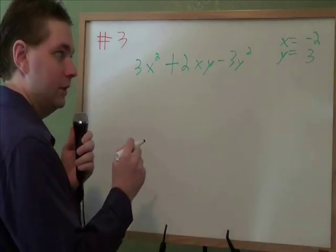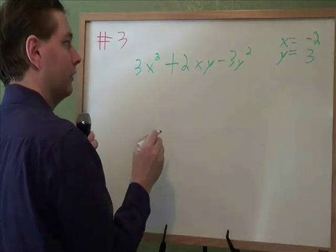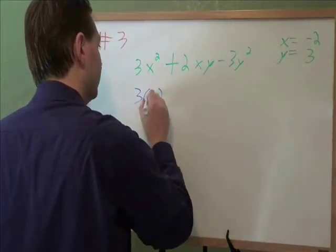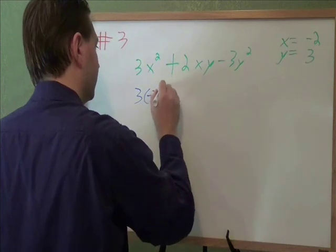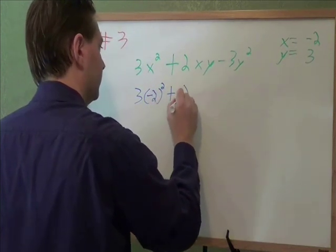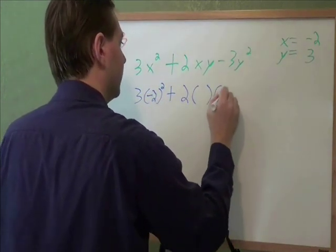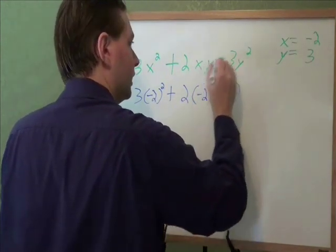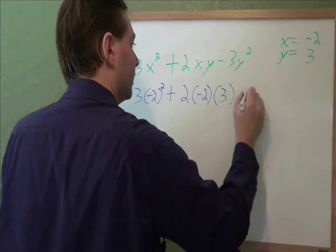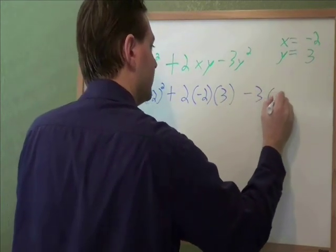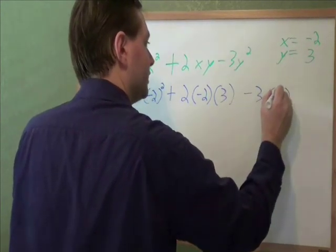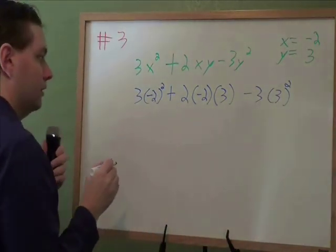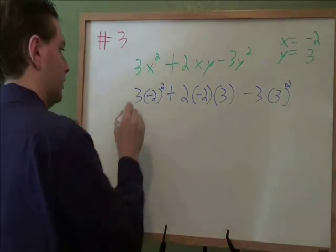For this problem, we just need to plug in the x and the y that they give us. So 3x squared becomes 3 negative 2 squared. 2xy becomes 2 times negative 2 times 3. 3 minus 3y squared becomes 3, 3 squared. And then we just start working out. Exponents go first.